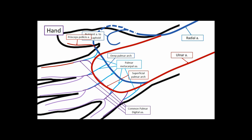Two more special arteries: princeps pollicis — 'pollicis' means thumb — and radialis indicis. Radialis tells you it's on the lateral side, and indicis means it's on the index finger. These you unfortunately just have to memorize.